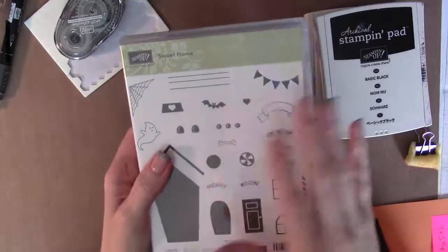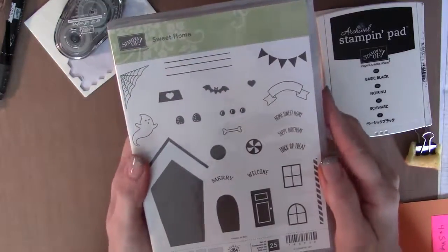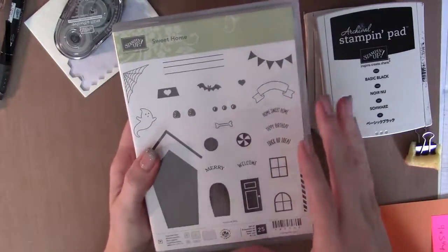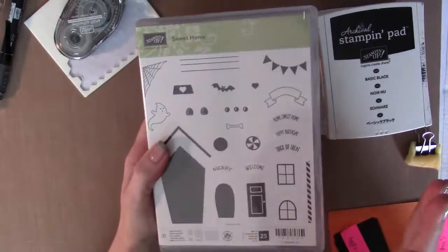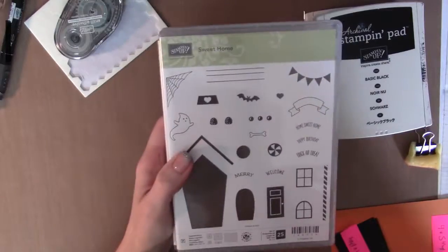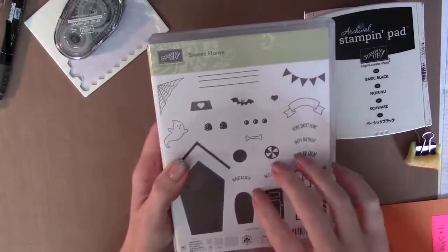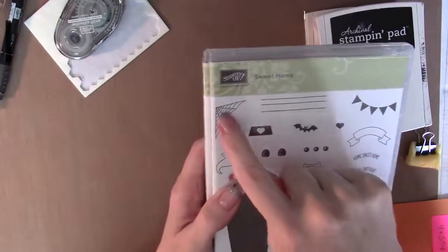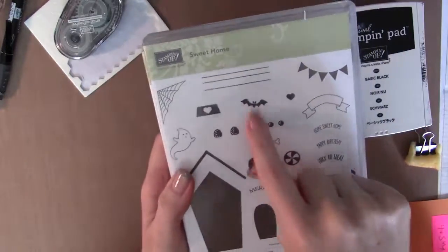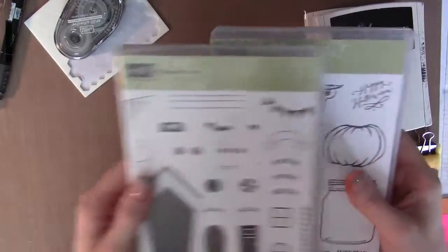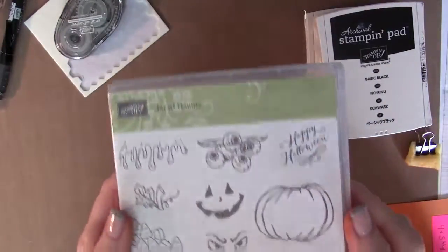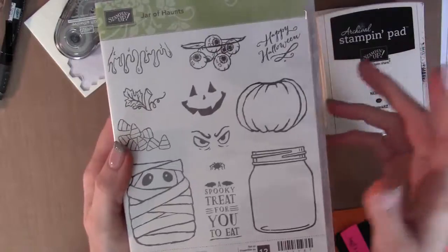We're gonna need this Sweet Home stamp set. This is the stamp set that we are using mostly on this project. In fact, you can pretty much get away with just using this one. We're gonna use the spiderweb, the ghost, the bat, the banner, and the trick-or-treat from this one.